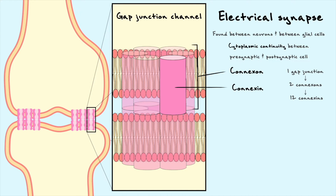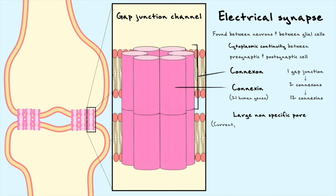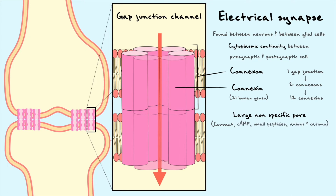Connexins are a very diverse group of transmembrane proteins. In the human genome, there are about 21 different types of connexin genes, which allows great diversity in gap junction channels. The two connexons together form one large non-specific pore that allows current to directly flow through. The large diameter pore also allows metabolic signals such as cAMP, small peptides, as well as inorganic anions and cations like calcium to flow through.